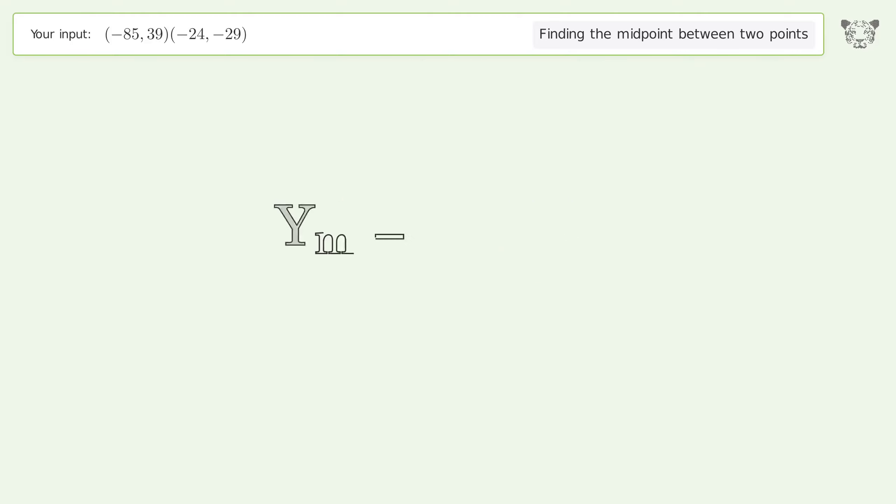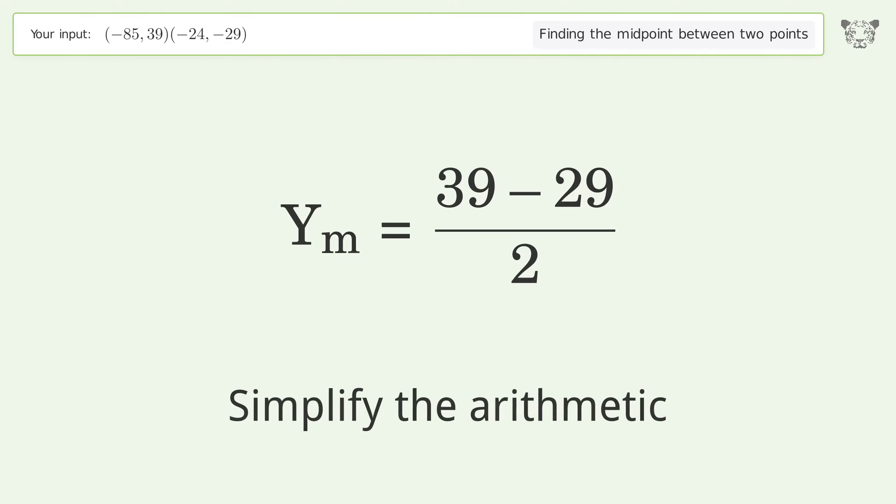Use the y values in the midpoint formula to find the midpoint's y. y1 equals 39, y2 equals -29. Simplify the arithmetic.